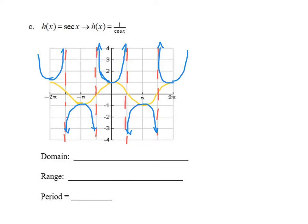I like to describe the shape of the secant curve as opposing horseshoes. There are asymptotes at π/2, negative π/2, and everywhere that cosine hits zero. You get this horseshoe shape that touches (0, 1) — since the reciprocal of 1 is 1 — then goes back up. On the negative side, small negative cosine values mean large negative secant values. Pause the video and fill in the domain, range, and period.